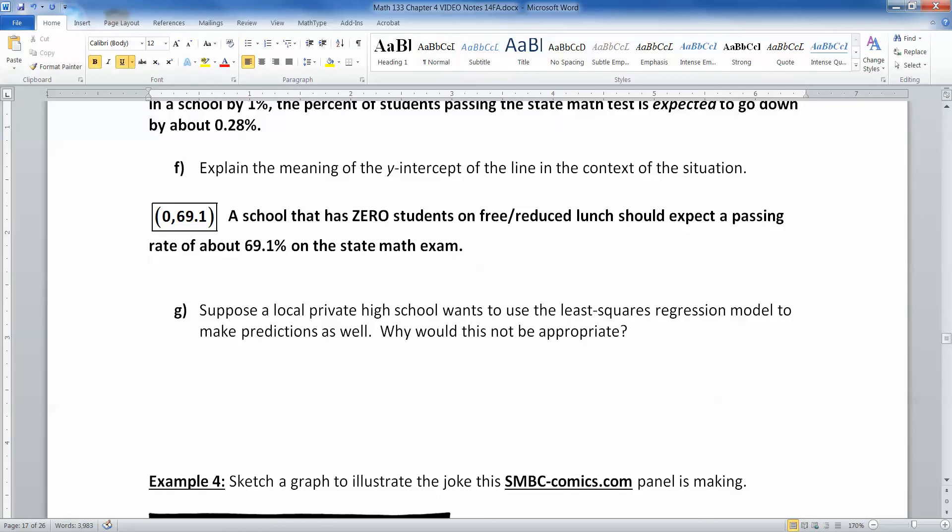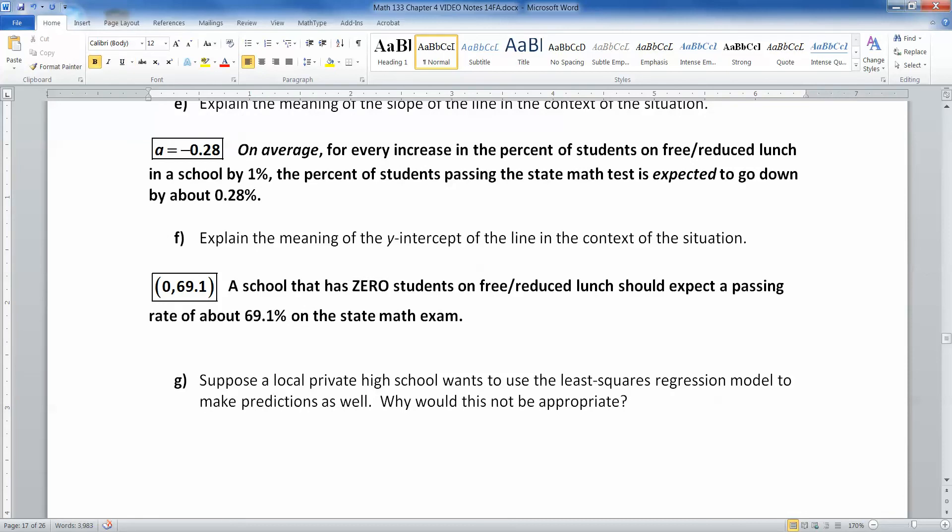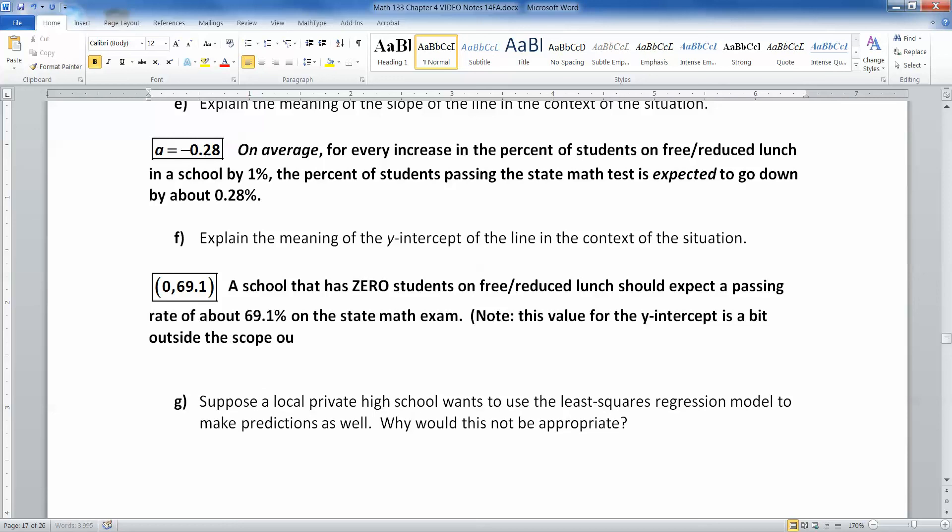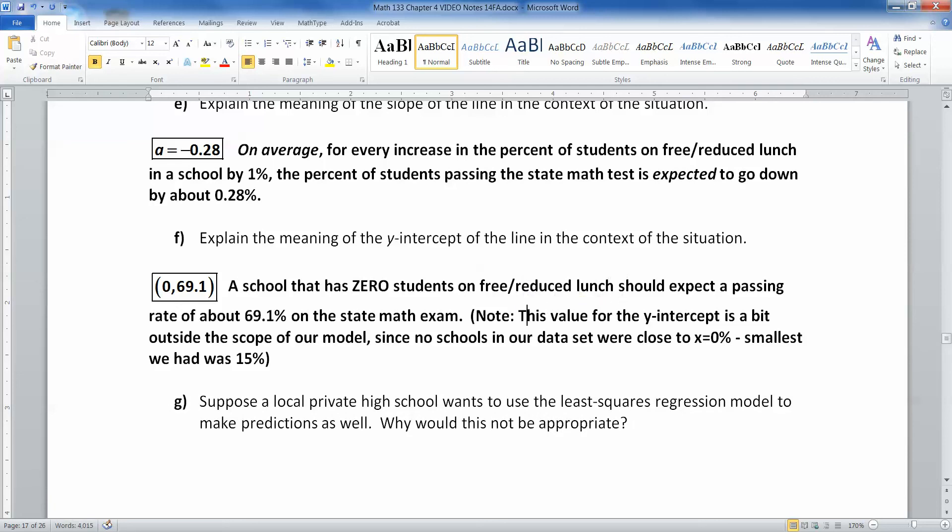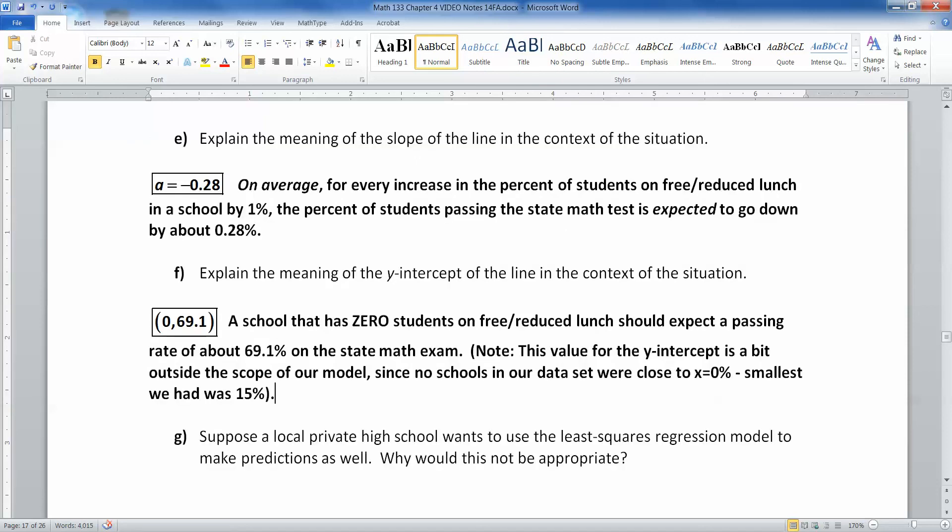Now suppose a local private high school wants to use this least squares regression model to make predictions. Why would that be inappropriate? Oh, before I even go further, I should make a note here. Note, this value for the Y intercept is a bit outside the scope of our model, since no schools in our data set were close to x equals 0%. The smallest we had was 15%. So you want to be a little bit cautious there because it's getting dicey because there's almost no schools that are public schools that would have nobody on free reduced lunch. So to even talk about this is a bit outside the scope of our model.